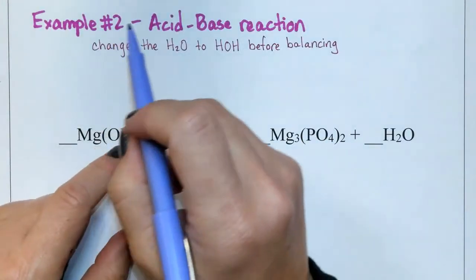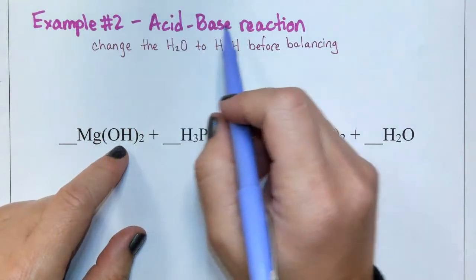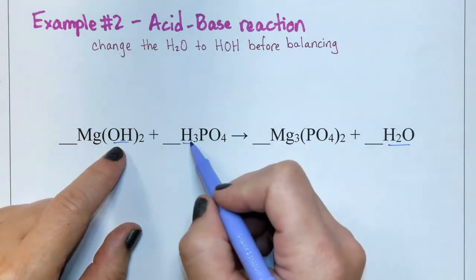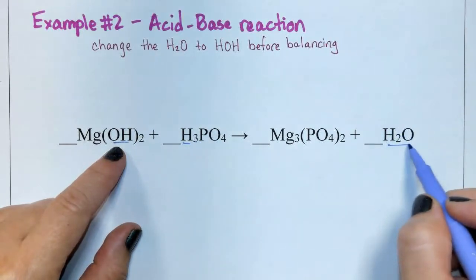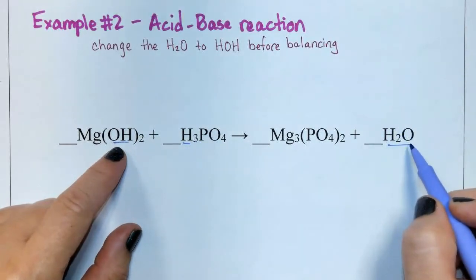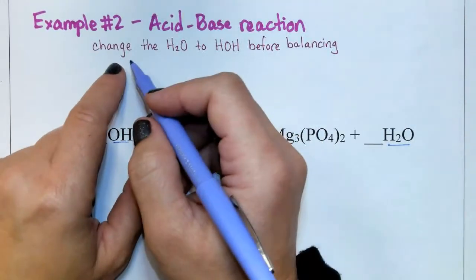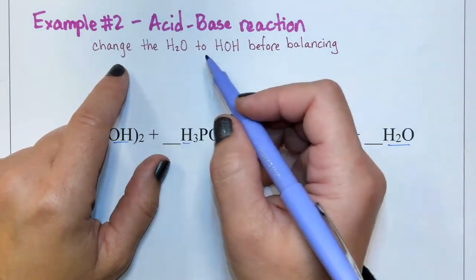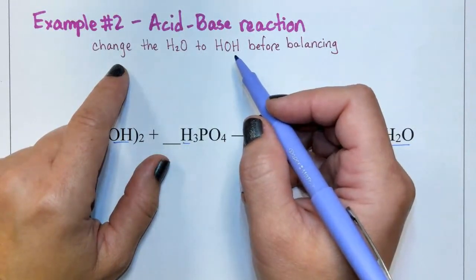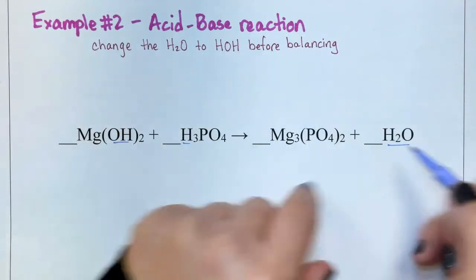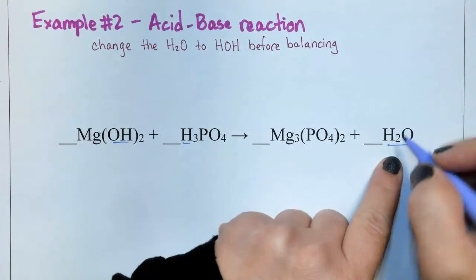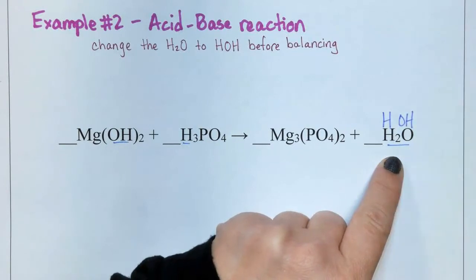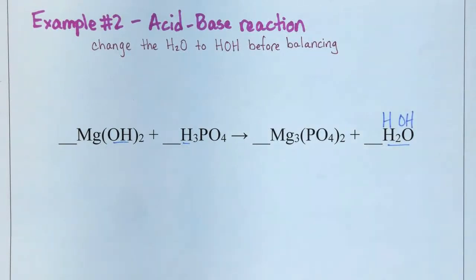Example number two is an acid-base reaction. We know this because there's a hydroxide and a hydrogen that yields water on the right-hand side. So in order to balance a reaction like this, we want to change the water to HOH, or hydrogen hydroxide, before balancing. So over here, I'm going to change H2O to HOH.